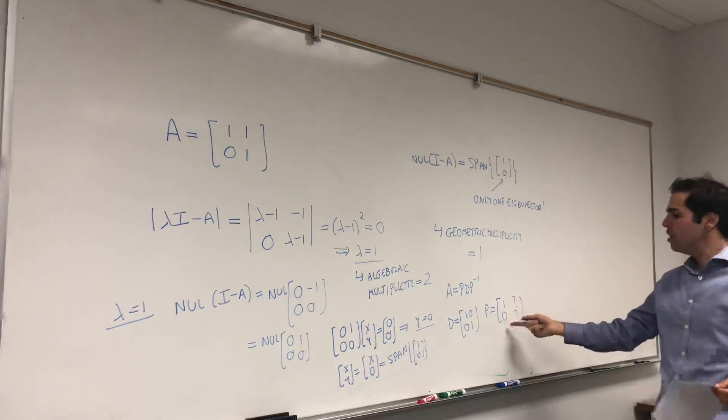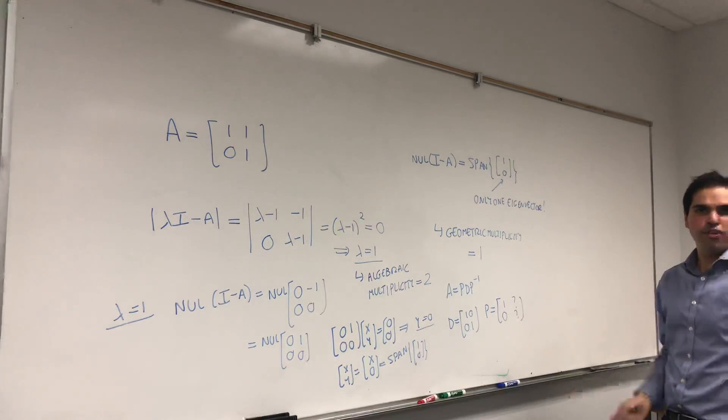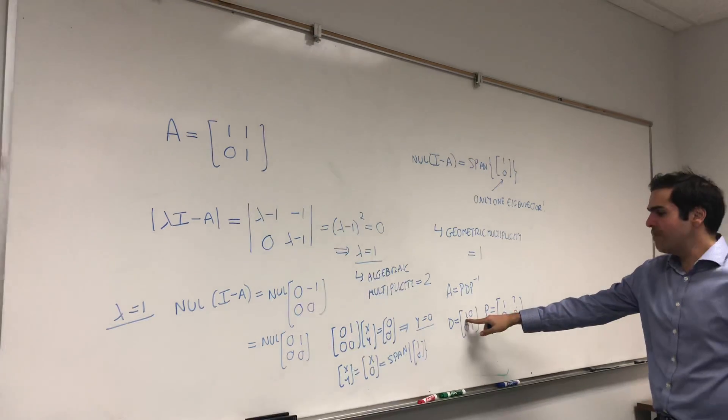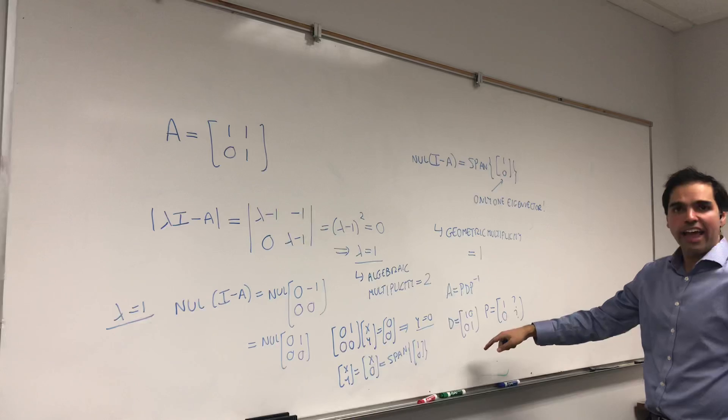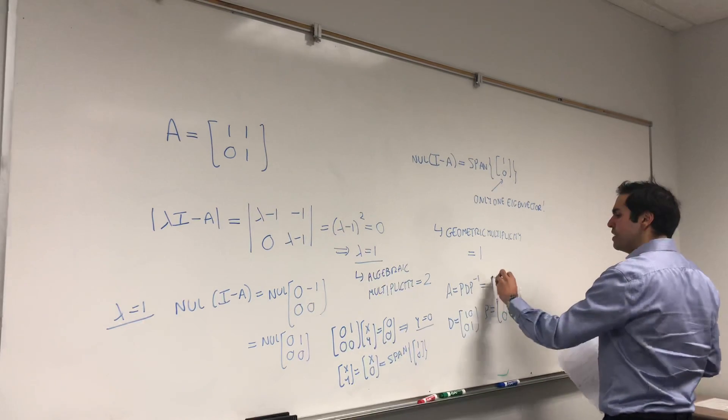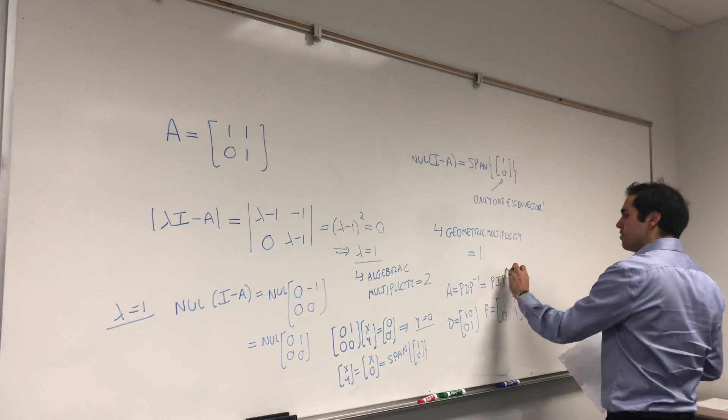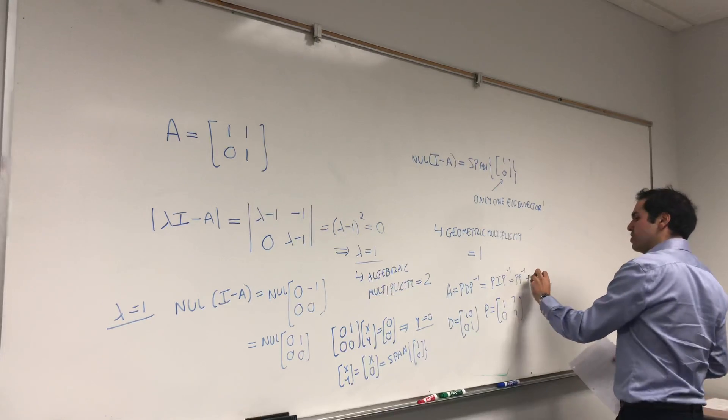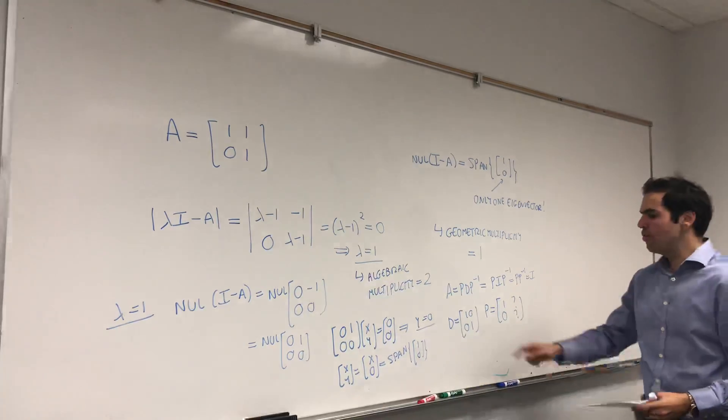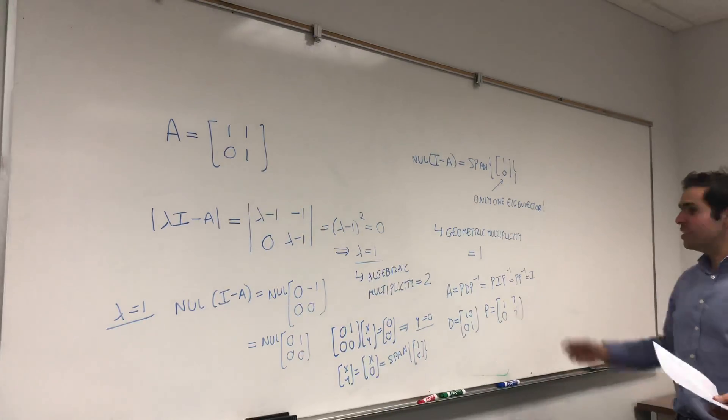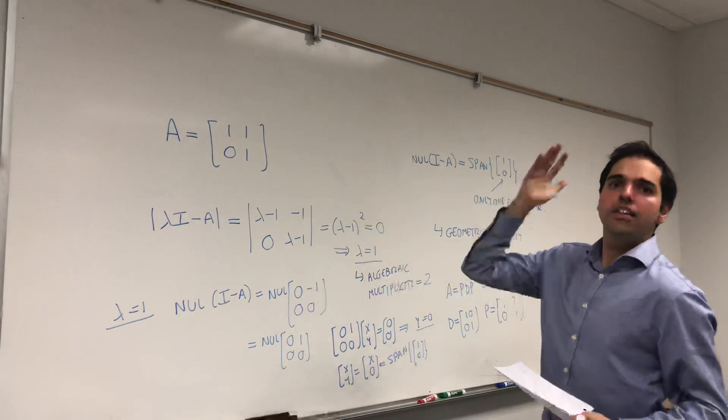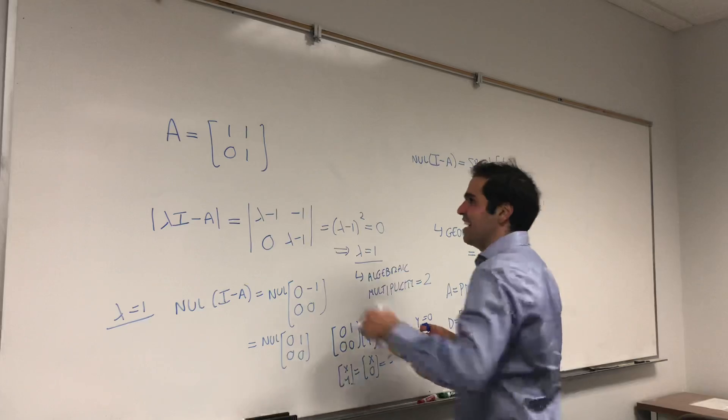You can't put 2, 0 because then P wouldn't be invertible. And in fact, notice if D is the matrix with 1s on the diagonal, it's the identity matrix. So A would have to be P, I, P inverse, which is P, P inverse, which is the identity. So in this case, if A were diagonalizable with D being this matrix, then it would have to be the identity. So in particular, turns out this matrix is not diagonalizable.